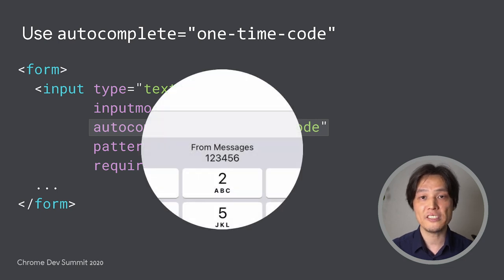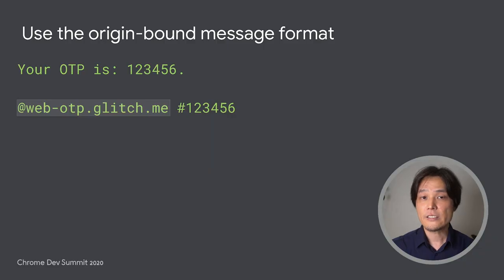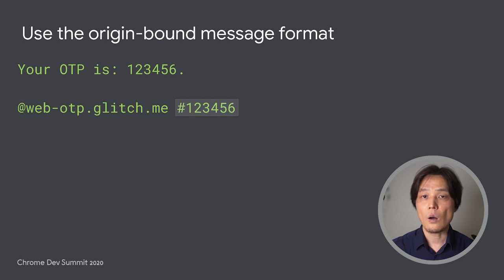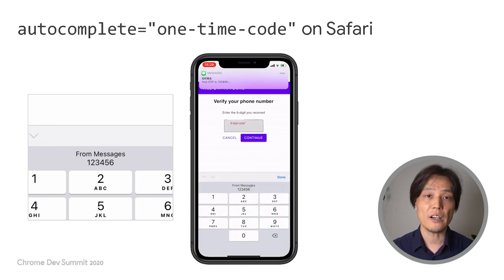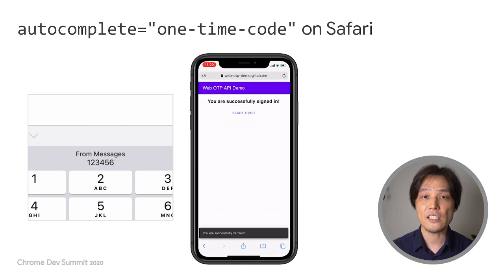iOS 12 and later heuristically detects an OTP from an SMS message and shows a suggestion on the keyboard for the user to enter the OTP. Now, there is a format you can align with to get the best out of OTP messages, and the good news is the same format works across Safari and Chrome. Just append the following at the last line of the message: the domain you want to bind the OTP to preceded with an @, and the actual OTP preceded with a #. By specifying a bound domain, the browser assists the user entering an OTP only when the domain matches. By specifying an OTP in this format, the browser retrieves the exact OTP and prevents picking the wrong numbers using heuristics. Starting from iOS 14 and macOS Big Sur, Safari respects this format and assists the user to enter the OTP.